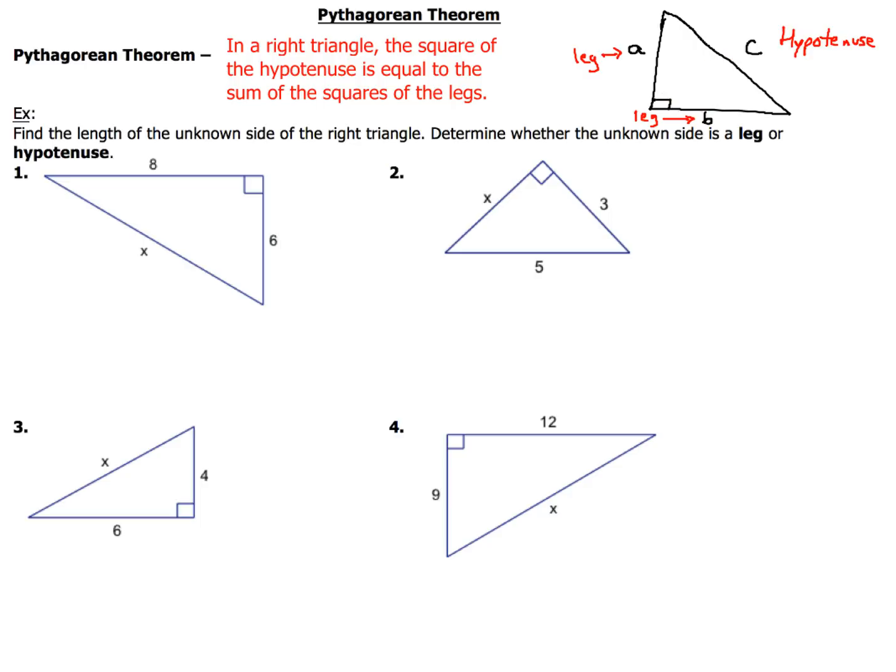So, that's all you gotta know, you gotta be able to identify the parts. And you're gonna have to be able to apply the theorem. Now, there's a couple different ways you can write it. Most commonly, people will see this theorem written as A squared plus B squared equals C squared.